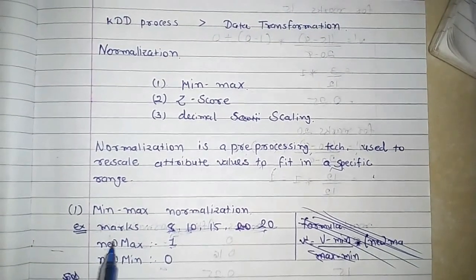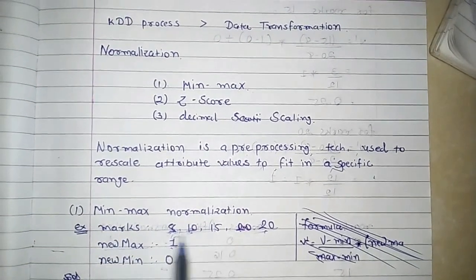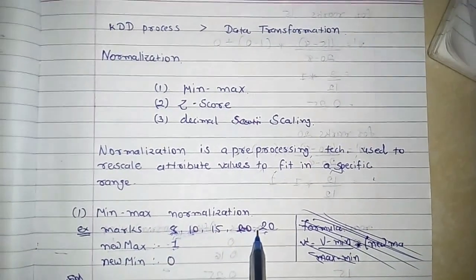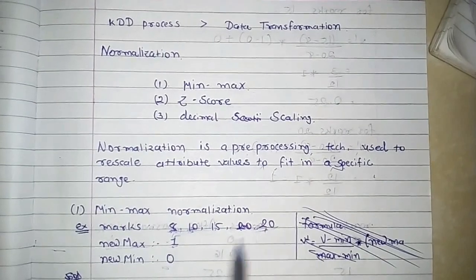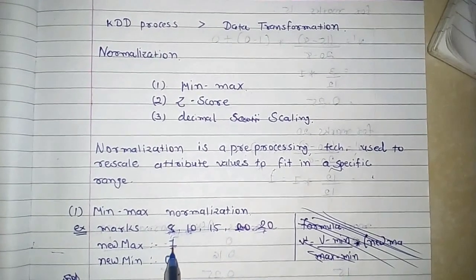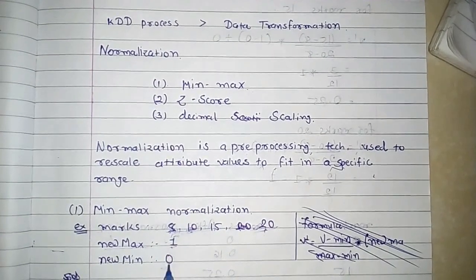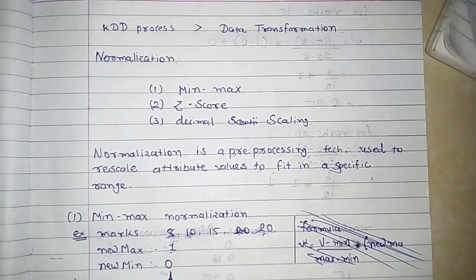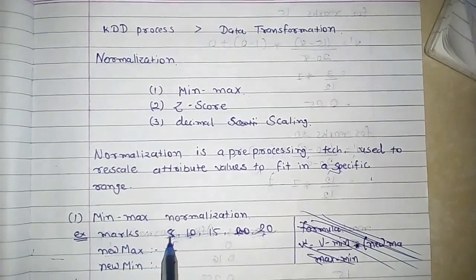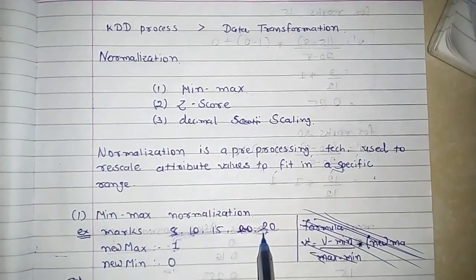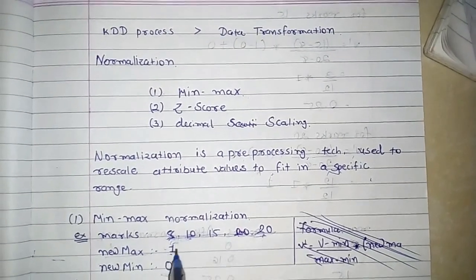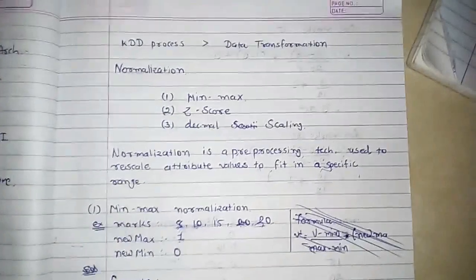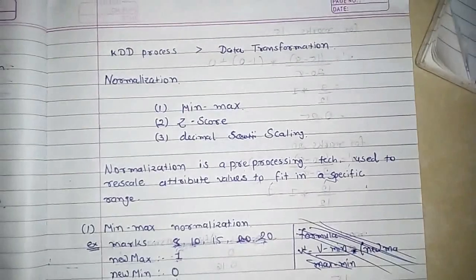In this question, for the given marks, we are specifying the new limits as 0 and 1. So we have to scale all the marks to fit in between 0 and 1.